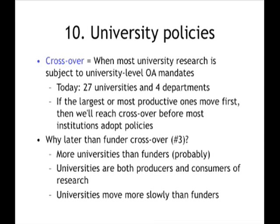I wish I had better numbers on it. There were roughly 30 university policies and roughly 30 funder policies. There are roughly 15,000 universities in the world and roughly 10,000 funding agencies — so we have 30 out of 15,000 university policies and 30 out of 10,000 funder policies. The rate of progress is faster for funding agencies than universities, and that's my experience just watching the announcements come out. Funding agencies are announcing them more often than universities.